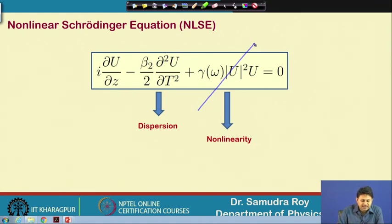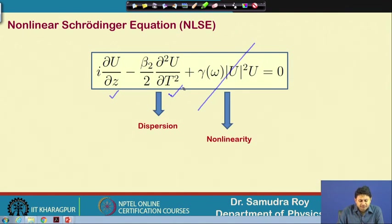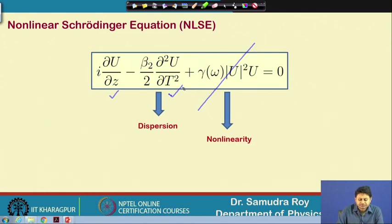In the Schrödinger equation we have a single time derivative and a second-order spatial derivative. Here we have exactly the same thing, but space and time coordinates are interchanged: we have a first-order derivative with respect to z (space) and a second-order derivative with respect to time — the opposite of what we have in quantum mechanics.